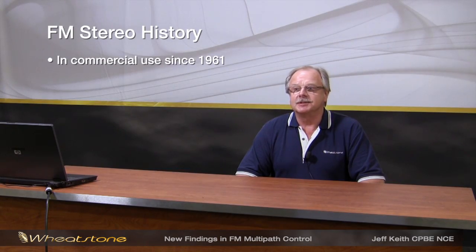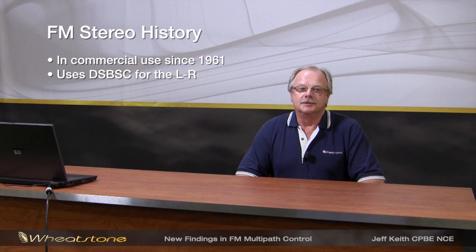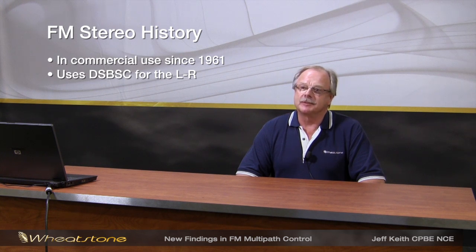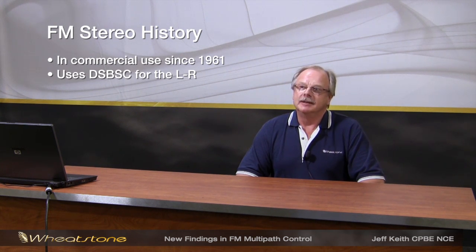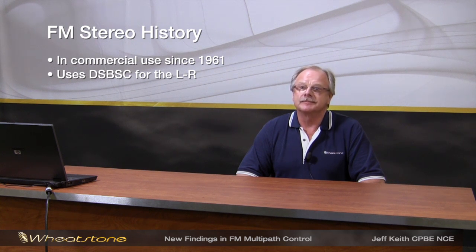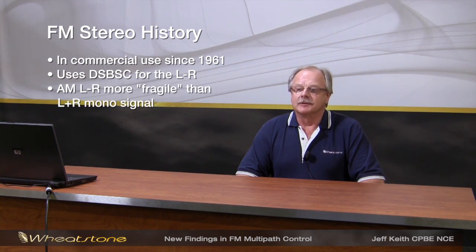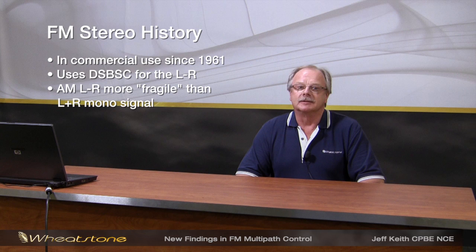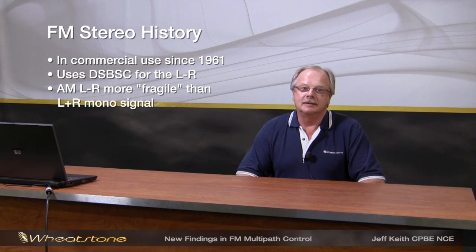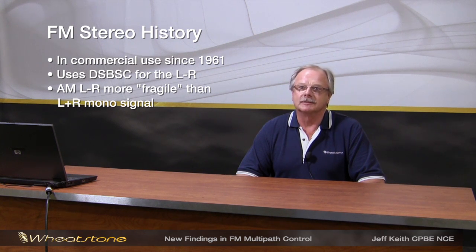FM stereo has been in use since 1961, so it's been around a while. It uses double sideband suppressed carrier for the L minus R. We did that because it made the stereo signal compatible with mono receivers. Unfortunately, the L minus R being an AM signal is more fragile than the L plus R, which is the FM signal.